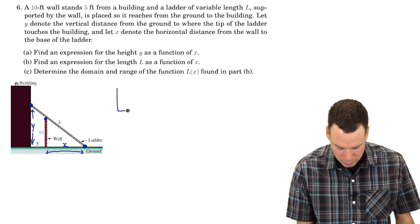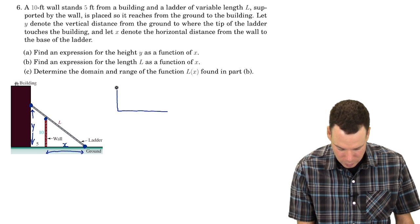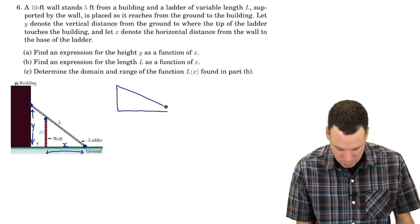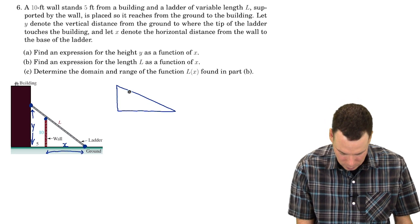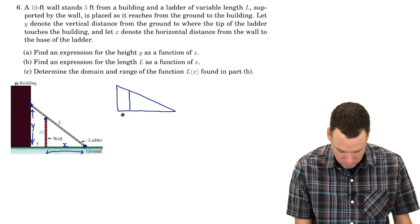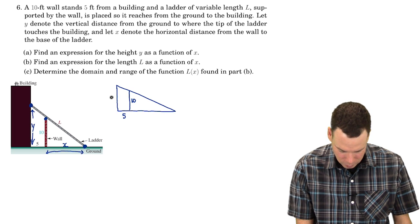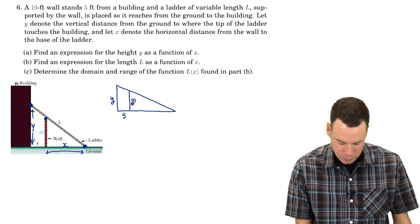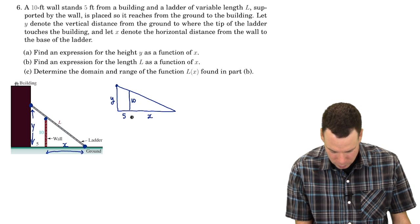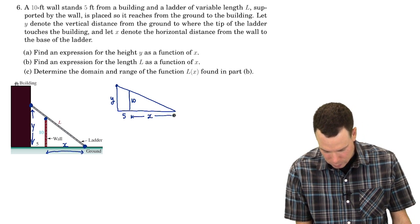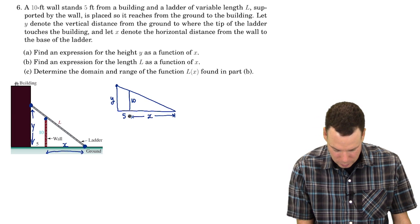So let's see if we can find an algebraic relationship between X and Y. Here I'll extract from the diagram the important bits: I've got 5 feet from the wall, 10 feet high the wall is, Y is our distance that the ladder reaches up the wall, X is our distance from the base of the ladder to the wall.